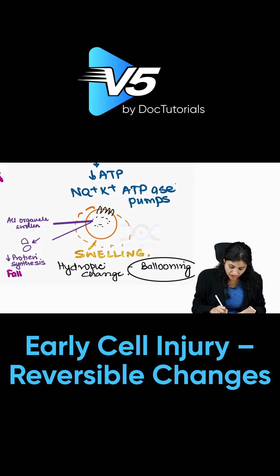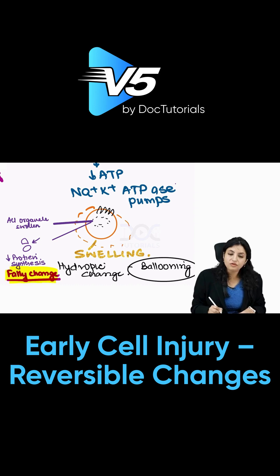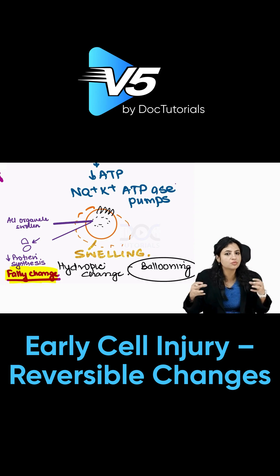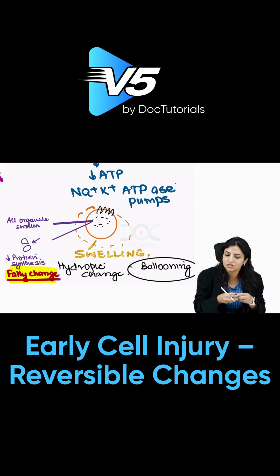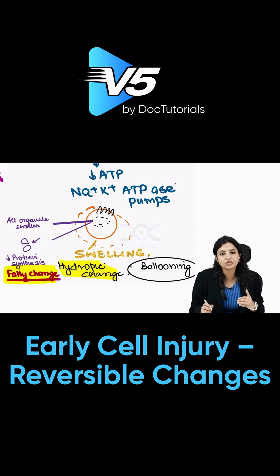When protein synthesis decreases, compensatorily the cell starts showing fatty change. So this fatty change is another feature you can see in reversible cell injury. Reversible means if you give oxygen, it can be reverted — the ribosomes will come close together, start protein synthesis, and the fats will disappear. So fatty change and hydropic change are two very important microscopic changes seen in reversible cell injury.